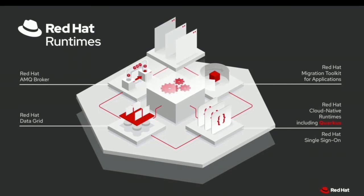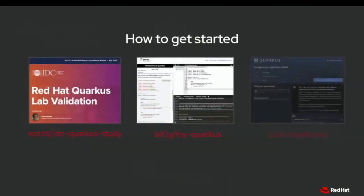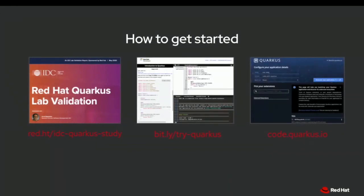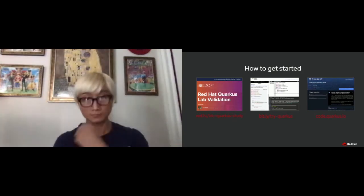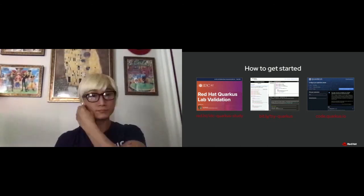If you're looking for enterprise-grade support when running Quarkus applications in production, feel free to reach out to a Red Hat sales representative to discuss more details. If you're interested in how to get started with Quarkus application development on your local machine or at your enterprise company, there are three great resources: first, an IDC report validating and comparing performance with other cloud-native Java stacks; second, an interactive self-service portal training website at developers.redhat.com/learn with lots of practical Quarkus scenarios you can go through by yourself; and third, code.quarkus.io — the starter where you can generate any application from scratch and add any extension to build your application.